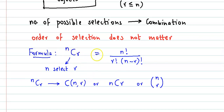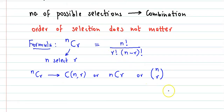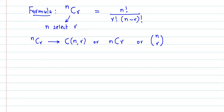Remember two things: पहले, combination हमको number of possible selections देता है। And second important thing is, यहाँ पर selection का order matter नहीं करता। Now let us take an example of selection.